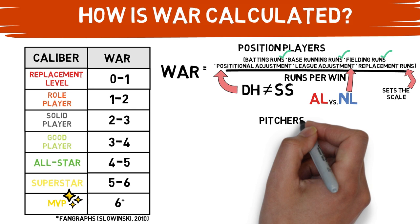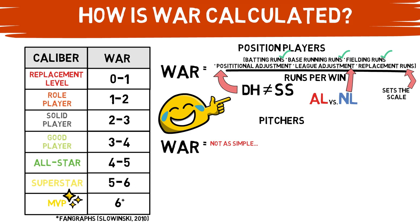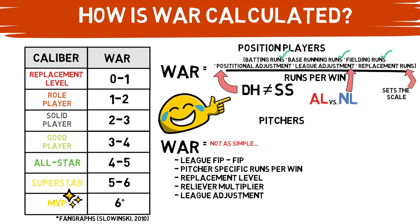Next, pitcher WAR — this is not quite as simple. Rather than listing the full formula, here are the key factors: league and replacement level adjustments, similar to position players, plus the pitcher's role — starter or reliever — and their FIP, which stands for Fielding Independent Pitching, a widely used sabermetric stat. This is the way WAR is calculated by FanGraphs. Different sources calculate it slightly differently, but the numbers come out similar.